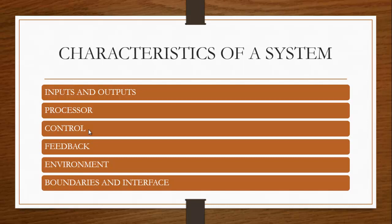Another characteristic is feedback. There are two types of feedback: positive feedback and negative feedback. Positive feedback encourages the performance of the system and shows that the output is being processed in line with specification. Negative feedback is informational in nature and helps provide the controller with information for action — it indicates that something is wrong with the output and that corrective action is needed to ensure the output meets the desired specification.